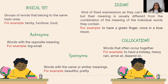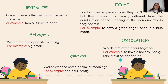Idioms are a kind of fixed expressions; they can be changed but their meaning is usually different from the combination of the meaning of the individual words they contain. For example, to have a green finger, or once in a blue moon.